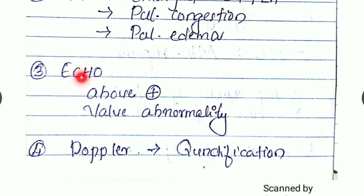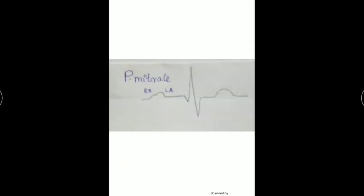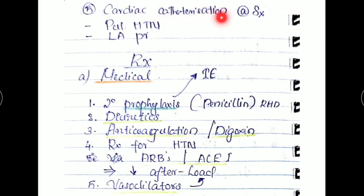In echo, you can confirm all these findings. Also, we have to look for any valvular abnormalities. Doppler studies for the quantification of the mitral regurgitation. We can do cardiac catheterization at the time of surgery for looking for pulmonary hypertension or left atrium pressure.